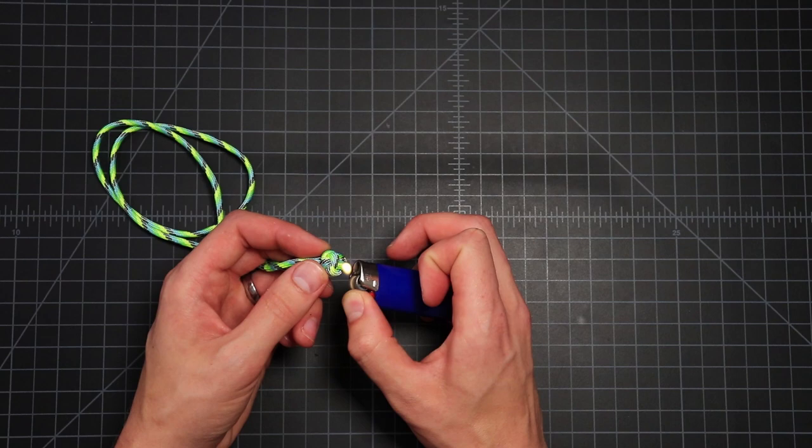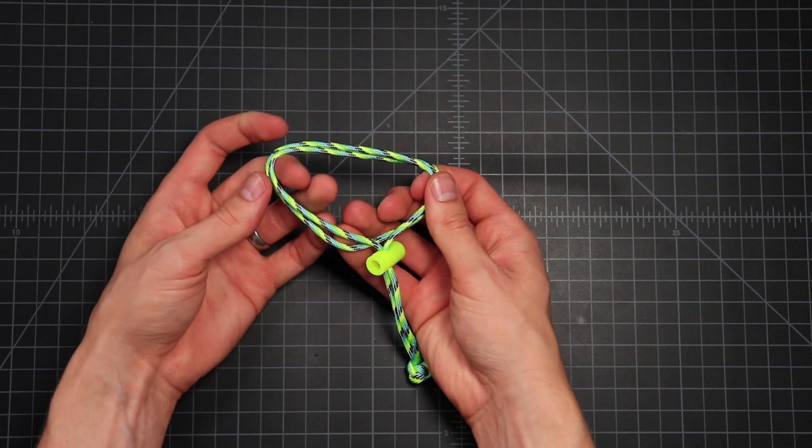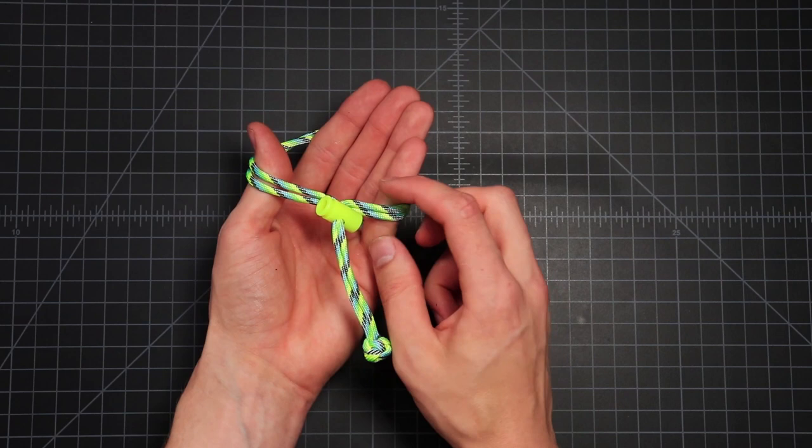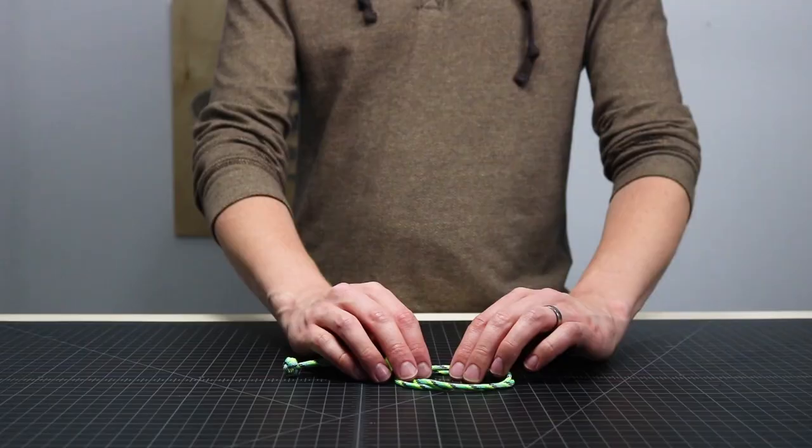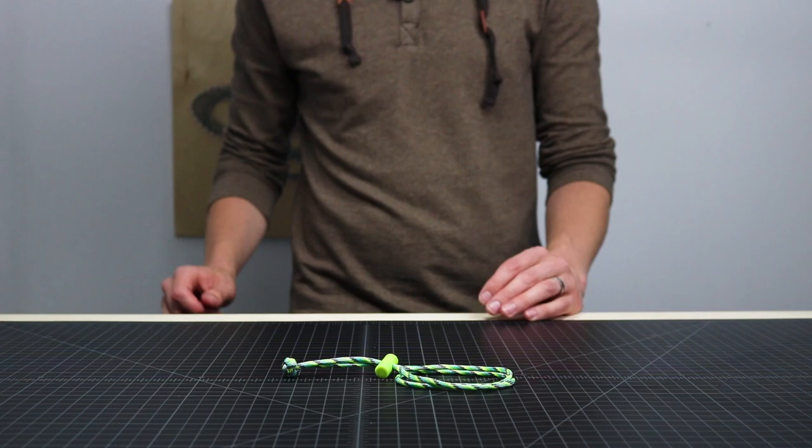Now that that part's done, we can get into making the actual handle. This is going to go around the neck of the water bottle, and the handle is going to go up above it. I'm going to put a buckle in it, but you don't have to add that step. You can just run our cobra weave from end to end. So to start off on that, we'll grab the rest of our paracord. And I'm going to cut off about 10 feet.